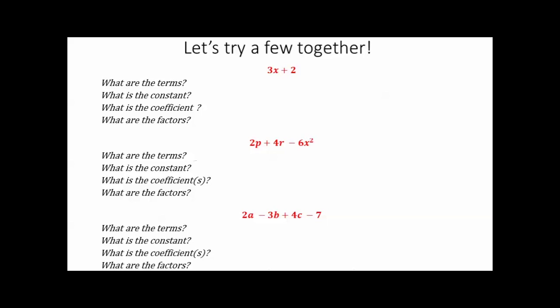So let's try a few examples together. So 3x plus 2. In this expression, they want to know what our terms are. Well, from our definition, we know that terms are separated by a plus or minus sign. So our terms here are going to be 3x and this positive 2. Then they ask us, what is the constant? Well, the constant is the number that's being added or subtracted in the expression that does not have a variable attached to it. It's constant. It's never going to change. In this case, that would be our plus 2.